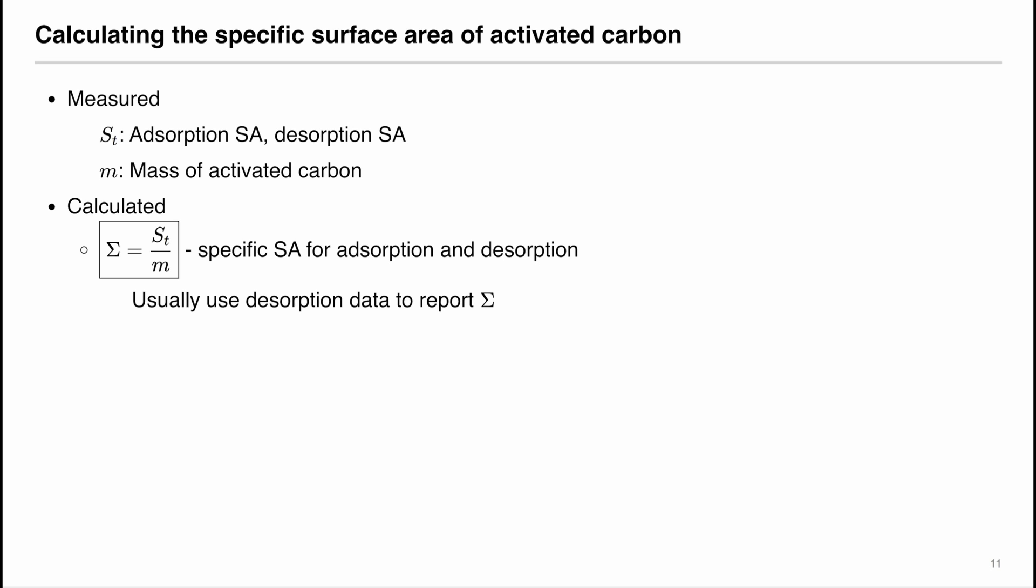When analyzing your results, remember that you measured the total surface area with adsorption and desorption values. You also measured the mass of the activated carbons. You want to calculate the specific surface area for adsorption and desorption by dividing the surface area with the mass that you use. Usually we will use the desorption data to report the specific surface area.